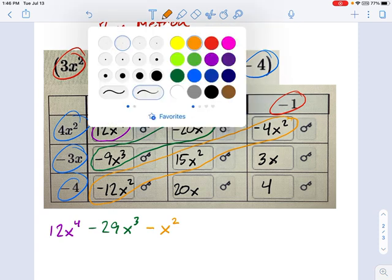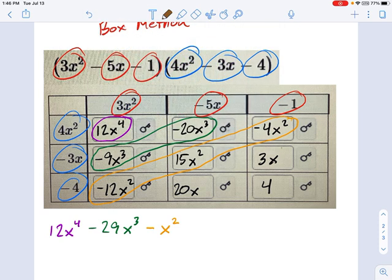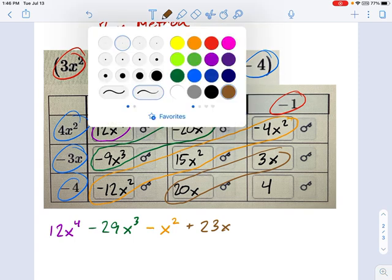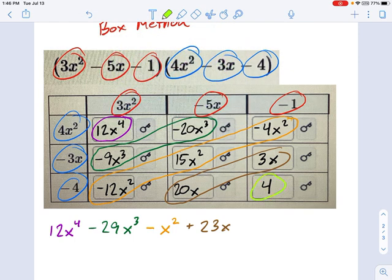And what color's left here? How about brown? 20x plus 3x will give me 23x. And the very last term here at the end, who haven't I used yet? Obnoxious green. That's a positive 4, okay?